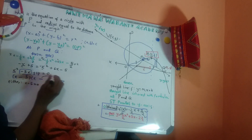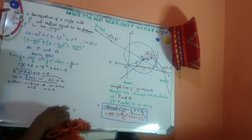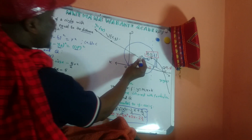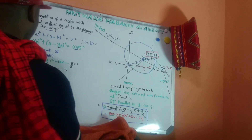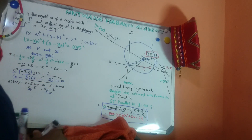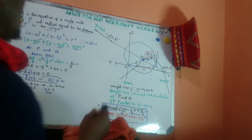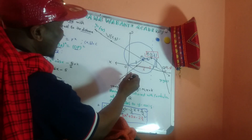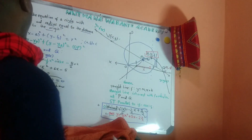So either x minus 5 equals zero or x minus 2 equals zero, giving x equals 5 or x equals 2. These are the x-coordinates of the points of intersection P and Q. Since we have two points P and Q: by inspection, x at P equals 2 and x at Q equals 5. Point Q has x equal to 5 and y equal to zero, but my focus is on point P, so x at P equals 2.